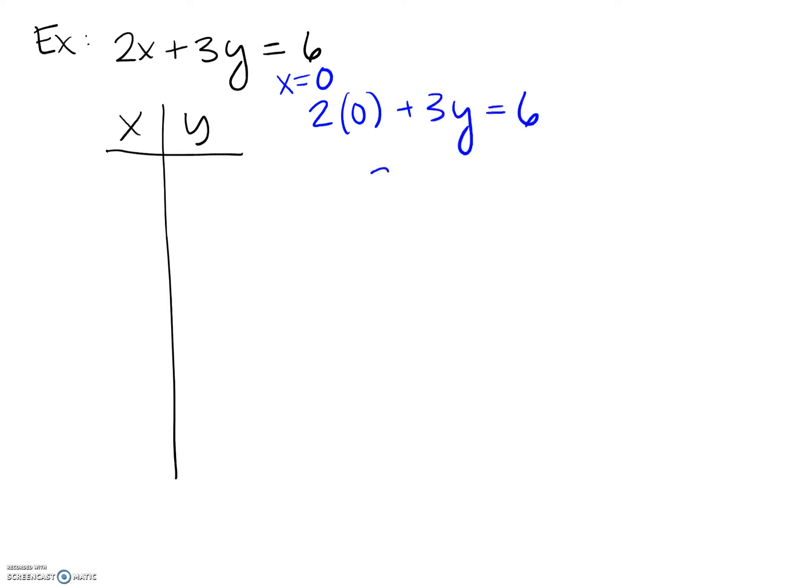We are lucky because both of our coefficients, our a and our b from that standard form, divide evenly into that constant of six. So when we get down to 3y equals six, solving for y is fairly straightforward. We just get y equals two. No gross fractions at all. So the first point we have is zero comma two.